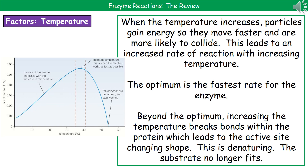When you get to the top point of the graph, that's called the optimum temperature — where the enzyme is working as fast as possible. If you increase the temperature beyond that point, the enzymes become denatured. The word denature means that the temperature has broken bonds within the protein, which leads to the active site changing shape, so the substrate and active site no longer fit together and the rate of reaction drops off very quickly. Do not say that at low temperatures the enzyme is denatured — it's not denatured at all, it's just not moving quickly. Denaturing only occurs at high temperatures.